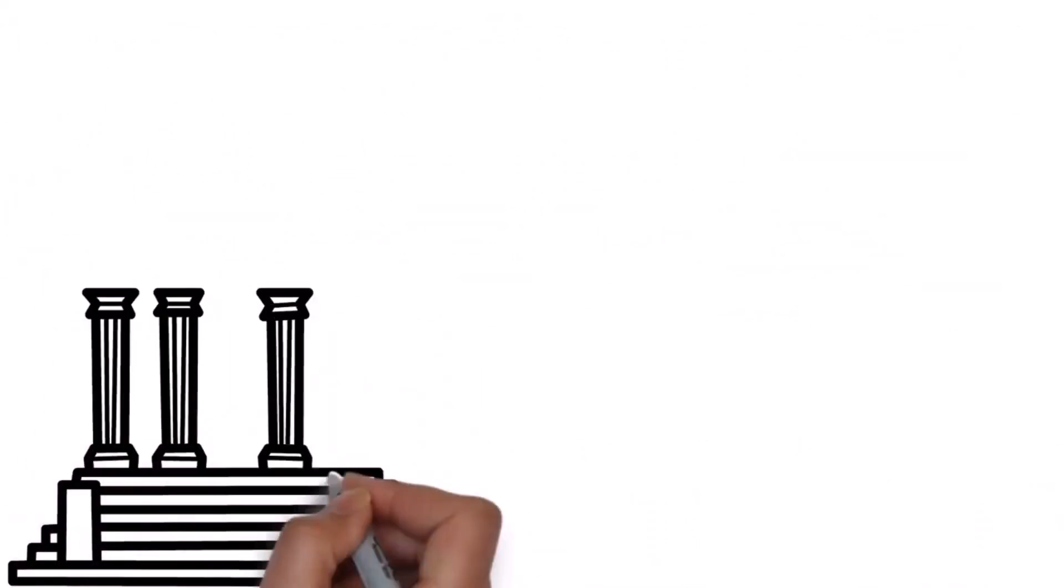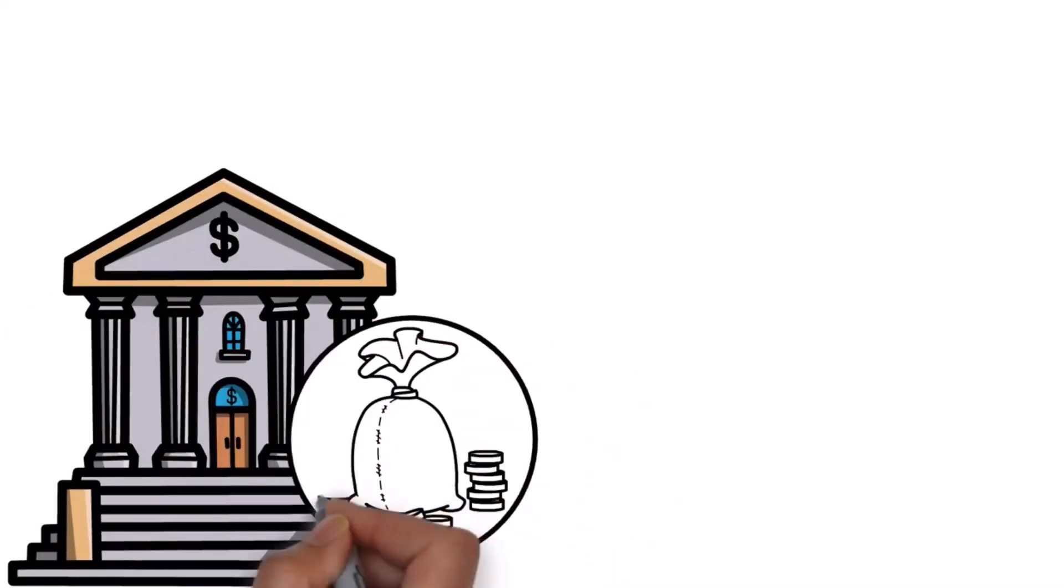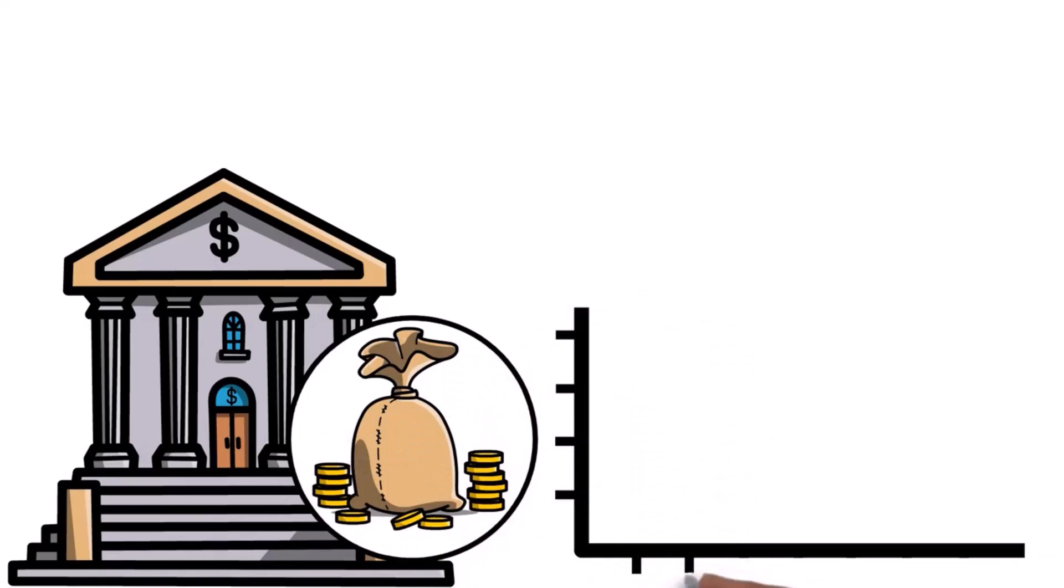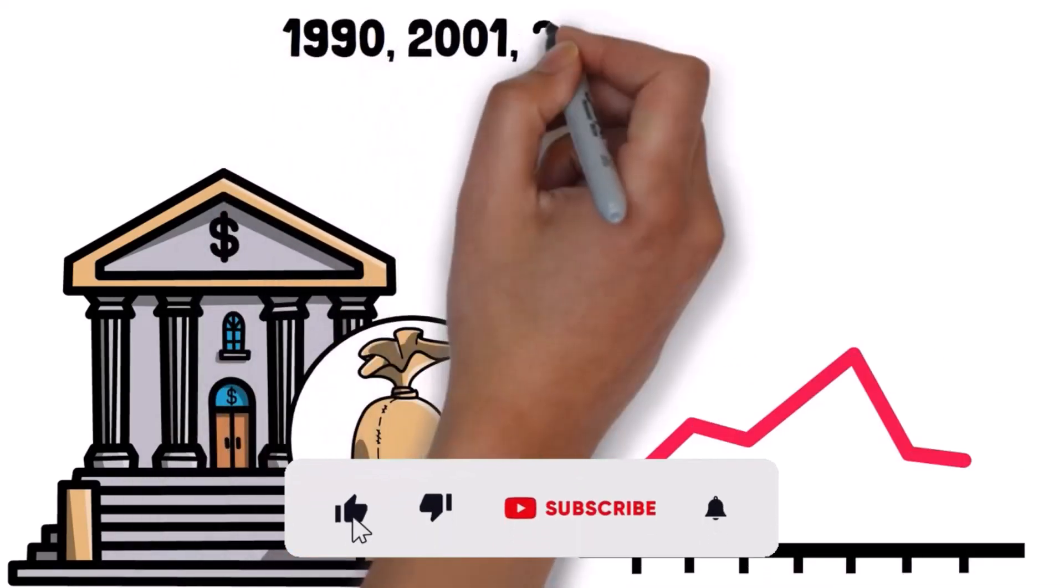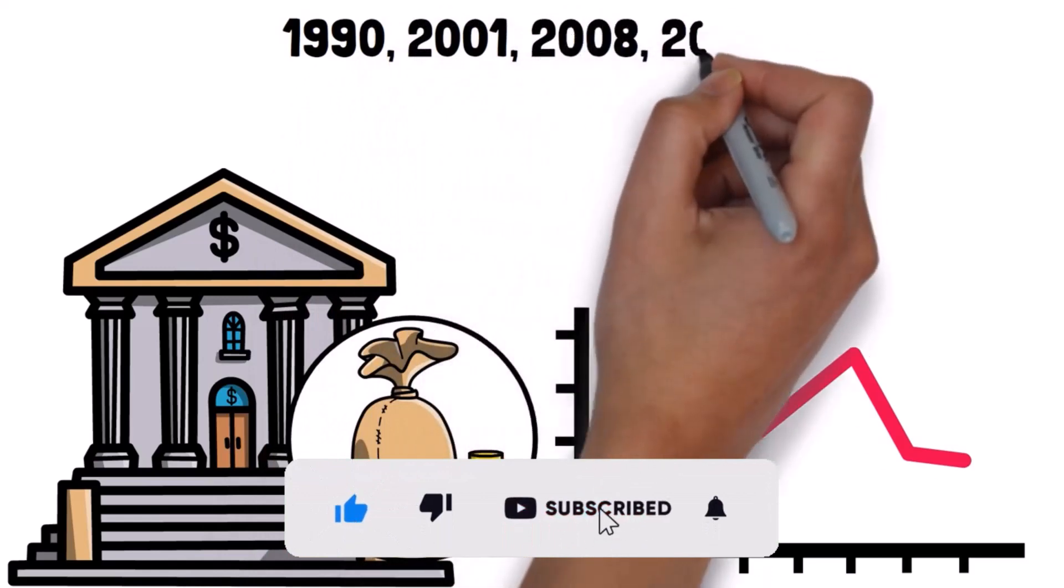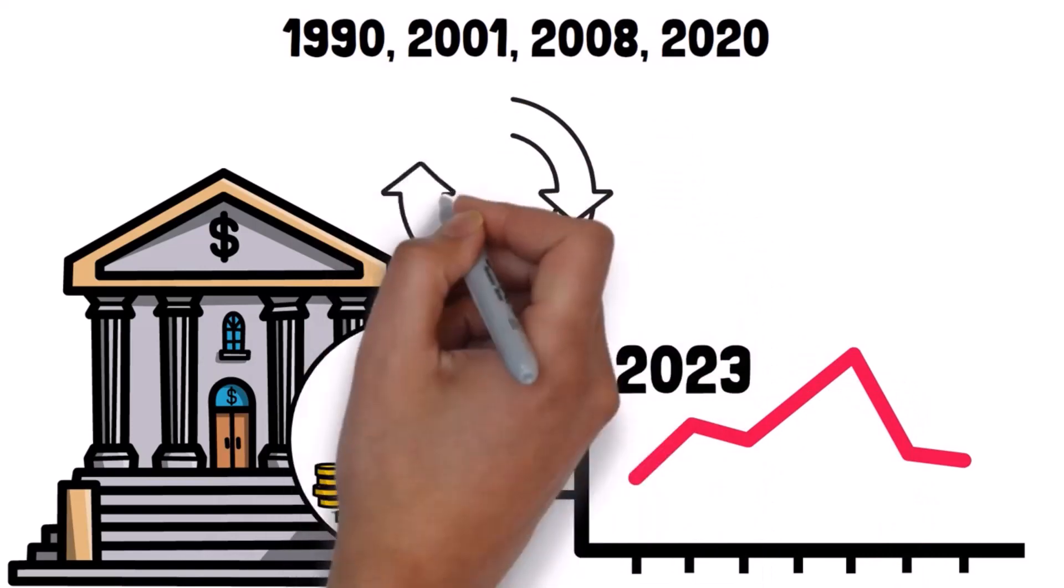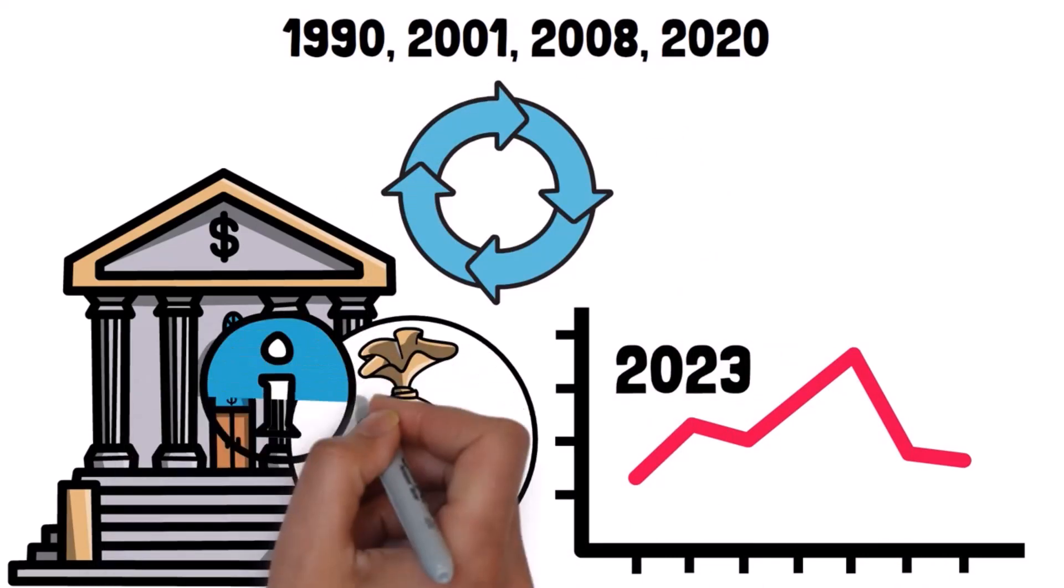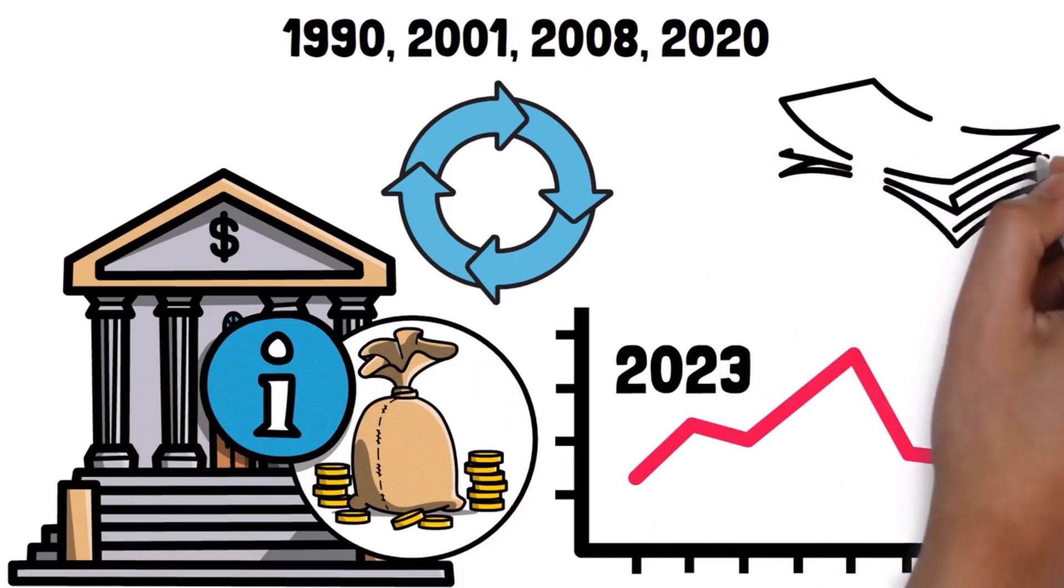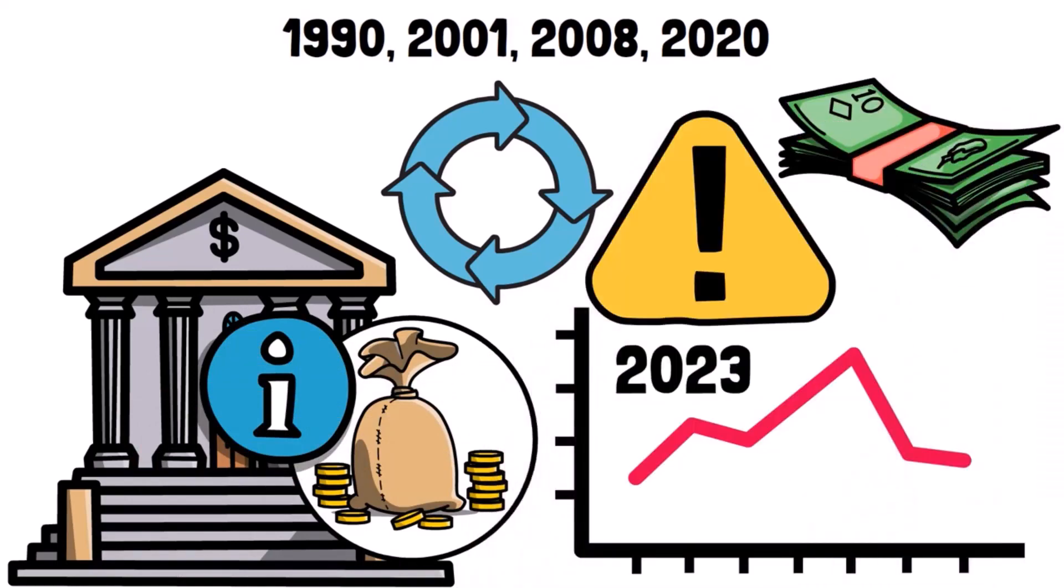Here's something else to consider. Banks are making it harder for people to borrow money. This is happening at a pace we usually see during economic downturns. In 1990, 2001, 2008 and 2020, banks tightened their lending standards a lot. And in 2023, they're doing it again. In simple terms, it's becoming tougher to borrow money, which means there's less money available in the economy and things might start to feel tight financially.